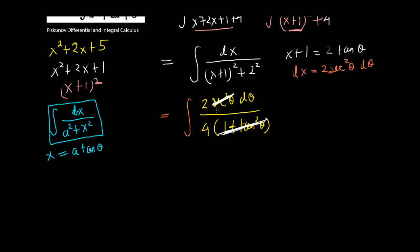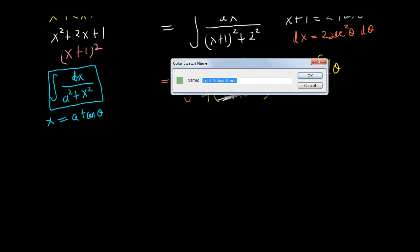And if you bring out the 2 over 4, it becomes 1 half. And you pull it out of the integral because it is a constant. So, it is the integral of just d theta. You cannot get an easier integral than this. So, it is 1 half of theta plus c.